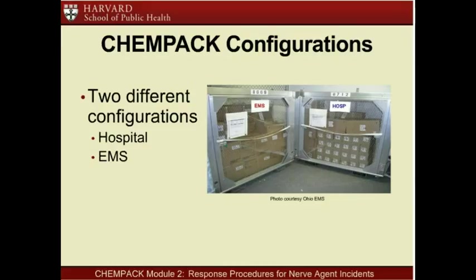Recall from Module 1 that there are two different configurations of ChemPAC containers: hospital-configured containers and EMS-configured containers. In Connecticut, the containers are stored in fire departments, the Connecticut Department of Public Health, and hospitals. Both configurations include antidotes for use by field responders and hospitals, just in different quantities. The EMS containers are configured to include more of the supplies needed by emergency medical services for field response—namely pre-filled auto-injectors that are easier to use in the field. The hospital containers are configured to include more multi-use vials for precision dosing and long-term care.